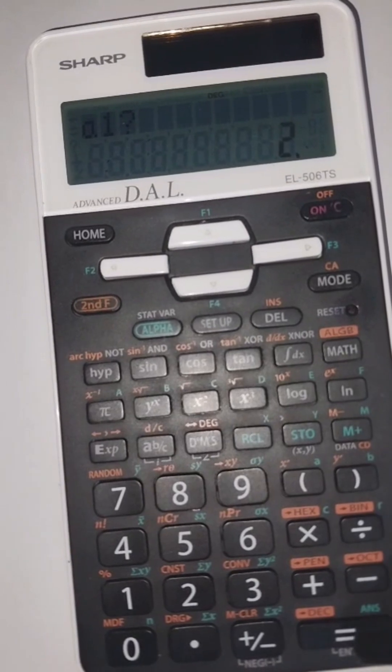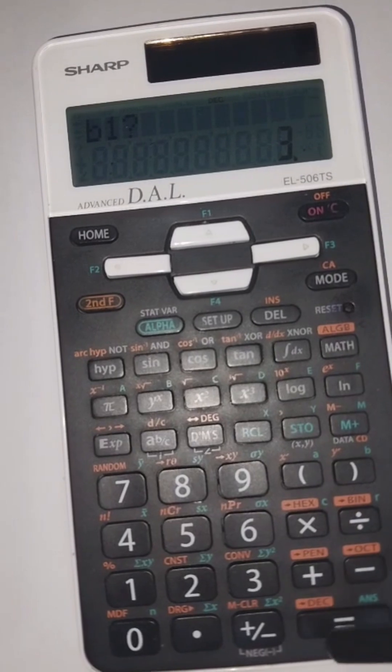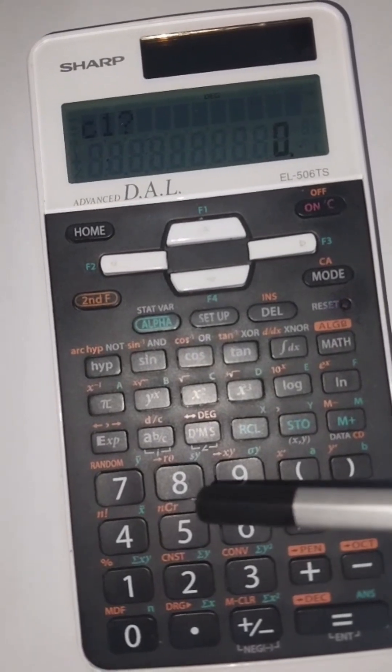A1 would be the coefficient of x which is 2 from equation 1. Then you press the equals button. In B1, the coefficient of y which is 3 from equation 1, and C1, the constant of equation 1.